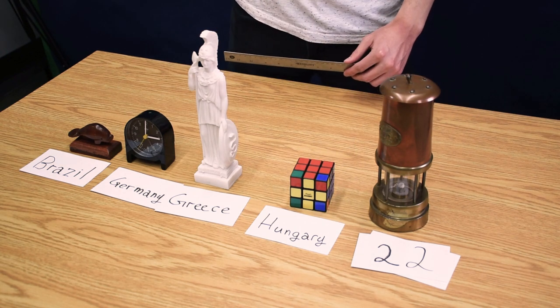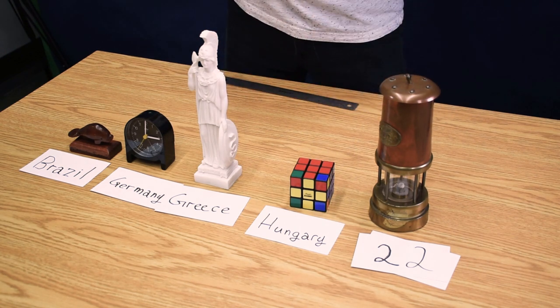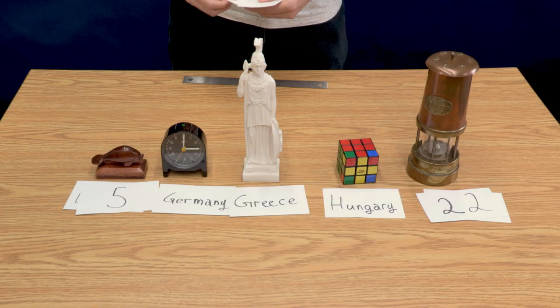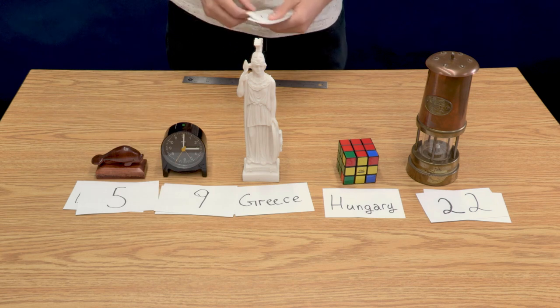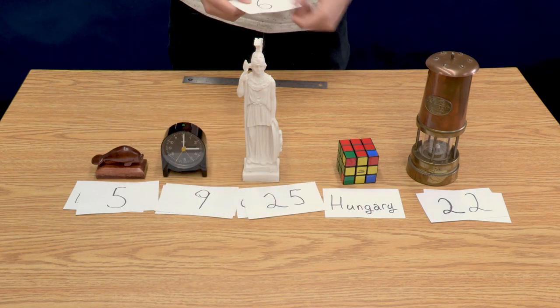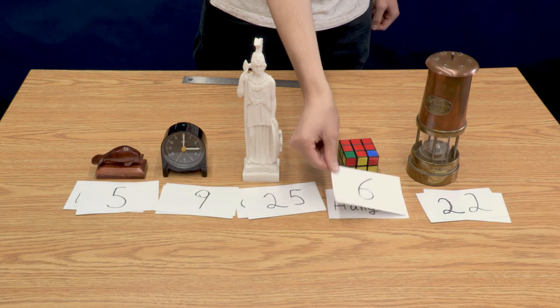Similarly, I'll do the same for the other trinkets. The manatee is approximately 5 centimeters tall. The clock is 9 centimeters tall. The statue is 25 centimeters tall. And the Rubik's Cube is 6 centimeters tall.